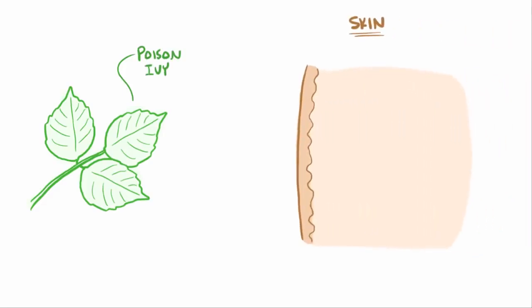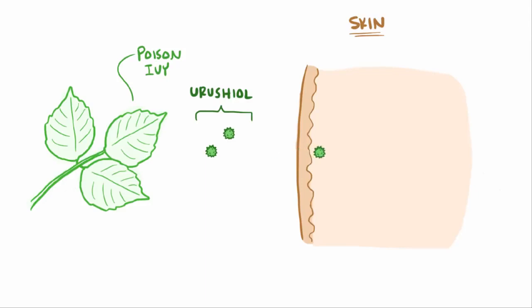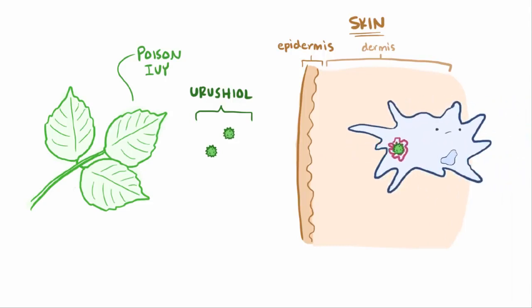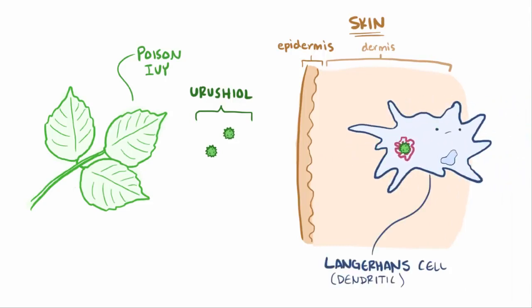Let's play out a scenario. Let's say someone's skin brushes up against some poison ivy. They'll get this molecule called urushiol all over. That molecule is small enough to quickly make its way through the epidermis to the dermis, where it might combine with small proteins, and then it might get picked up by a Langerhans cell, also known as a dendritic cell, which is a type of antigen-presenting immune cell.